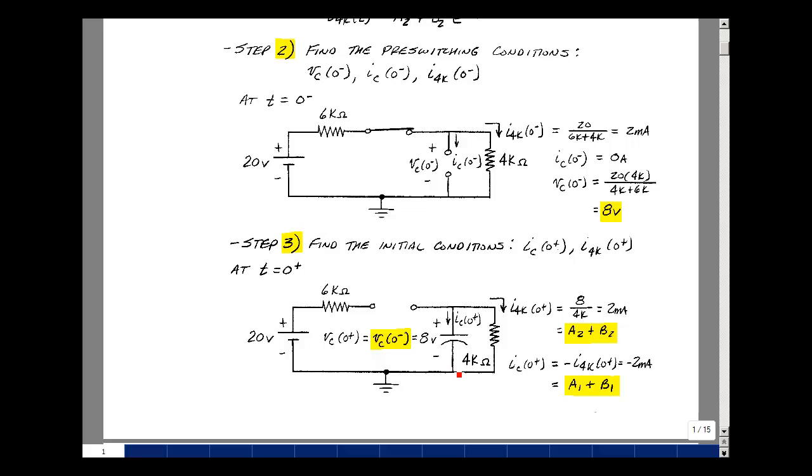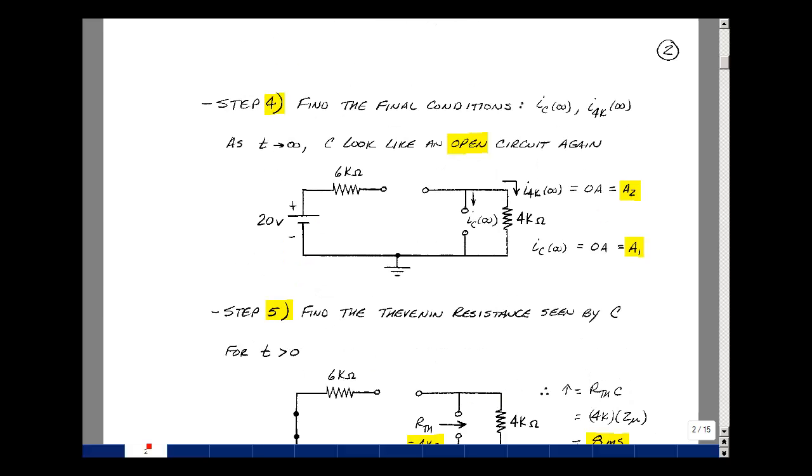The current in the capacitor would be, since there's an open circuit here, this current is going to have to all flow this way. That's going to be the negative of the current in the 4k resistor, so it's minus 2 milliamps. That's going to be a1 plus b1 times e to the 0, and e to the 0 is 1, so just a1 plus b1. So I have one equation and my two unknowns.